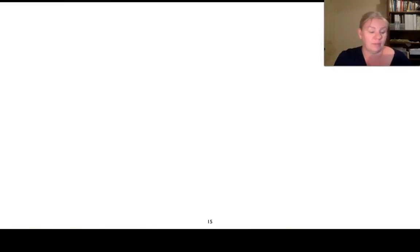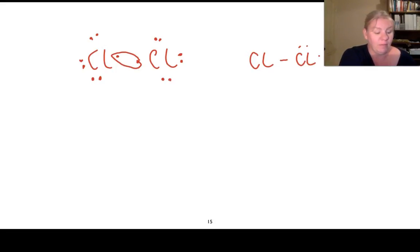So chlorine is our first one. If we draw a chlorine, we've got Cl and a second Cl. Around this chlorine here, we've got one through seven electrons. And this chlorine here, one through seven. So these two here can share. And so we end up with Cl bonding to Cl with our pairs of valence electrons on the outside shell.